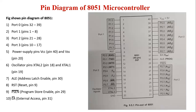The last pin is EA, which is the External Access pin at pin number 31. When the EA pin is high, meaning connected to VCC, program pages to addresses 0000H through 0FFFH are directed to the internal ROM. Program pages to addresses 1000H through FFFFH are directed to external ROM or EPROM.